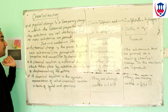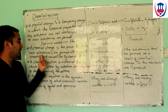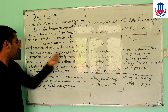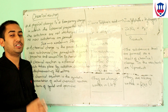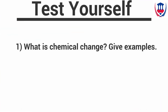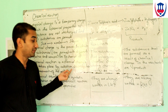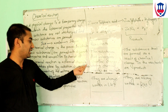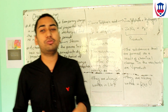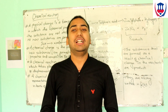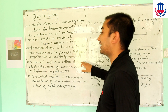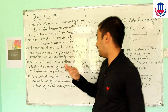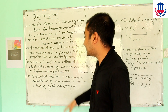Chemical change is the process in which new substances are formed with different properties and composition. For example, chemical reactions like addition and displacement. A chemical reaction is a chemical change which takes place by addition, decomposition, or displacement of atoms. So, chemical reaction is the chemical change which takes place by the addition or displacement of atoms in a molecule.